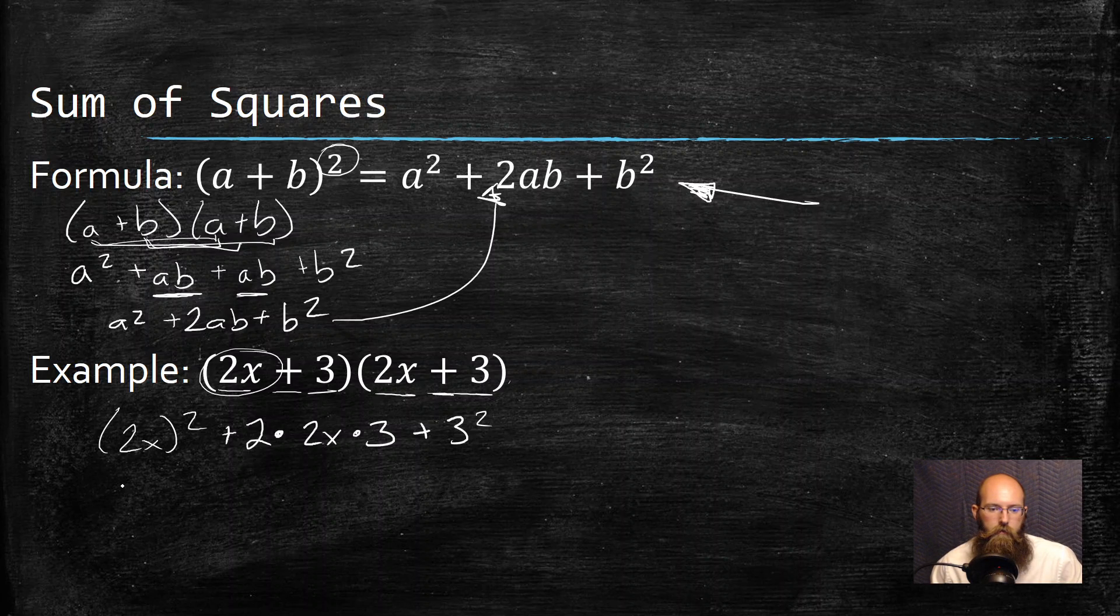2x all squared gets me 4 because I square the 2s and I square the x and get x². Next thing I multiply all that: 2 times 2 is 4 times 3 is 12x. And then 3² is 9.